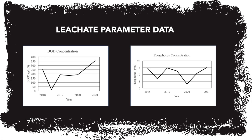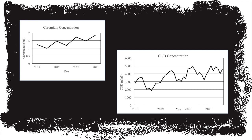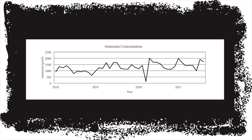Next is the leachate parameter data. The BOD concentration and phosphorus concentration start at a high, then fall off, climb, fall off, and then reach a peak again. These trends can also be seen for the chromium and COD concentrations. For ammonia concentration, aged leachate shows a lower concentration while fresh leachate shows a higher concentration.